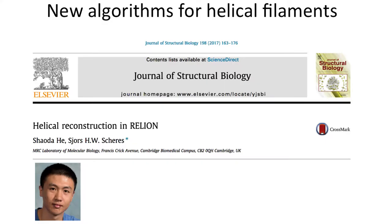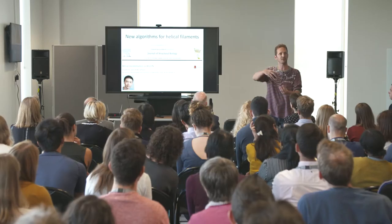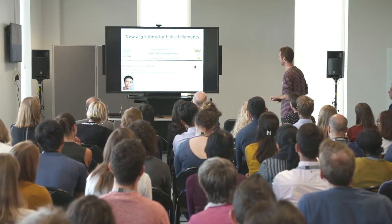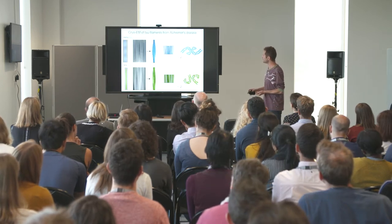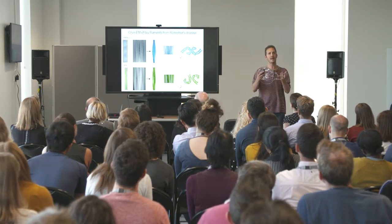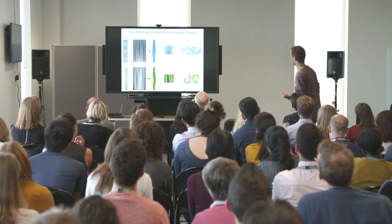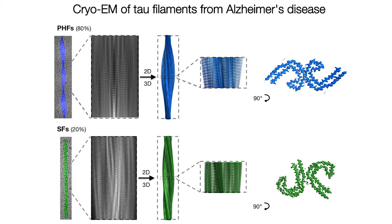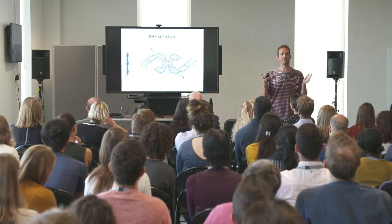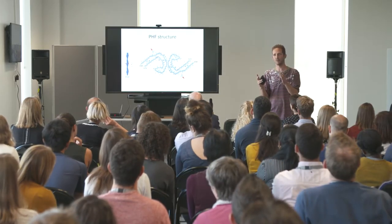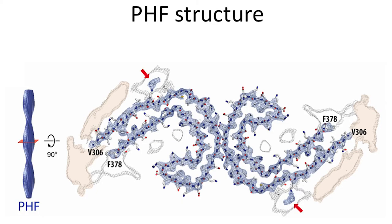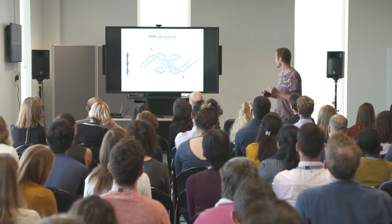Shouda, a PhD student in my group, expanded our software to deal with helical symmetry present in these amyloid-like filaments. We used Shouda's software to solve the structures of paired helical filaments and straight filaments from the brain of an Alzheimer's patient using cryo-EM, at resolutions sufficiently high that you can build an atomic model for how the tau protein arranges in these filaments.